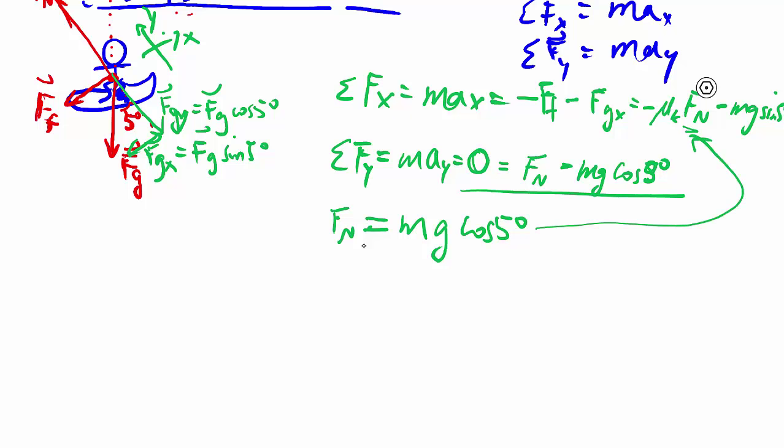Now that we have that, we solve it back up here, we can find that max equals negative mu k times mg cosine 5 degrees minus mg sine 5 degrees. A couple of things to notice. First, there's m in each of these terms, so all the m's cancel out on both sides. It doesn't really matter how heavy the snowboarder is in this case. And that's also why we want to keep symbols around for as long as we can. So we can solve directly now for ax.